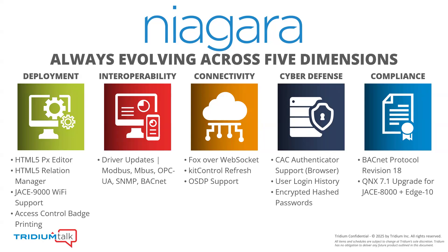Keeping watch on ASHRAE Standard 231 as it's in public review, we want to be prepared for when it's ready. We've identified six or seven kit control objects that we'll need, and they've been added in 4.15. For cyber defense, we have a new authentication type — the common access card — allowing those users to use it through the browser for station connections. User login history and encrypted hash passwords continue to keep our security at the highest, most secure-by-default way. With compliance, we're still moving forward with BACnet, and with 4.15, we will be going into testing with revision 18.